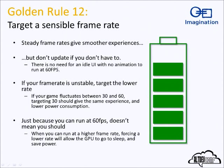The last golden rule: never forget the giant green battery — try to target a sensible frame rate. Steady frame rates give better experiences, and there's no reason to render a static UI 60 times a second if it's not going to change — render once and start again on user input. We've found that a fluctuating frame rate between 30 and 60 FPS feels the same as a steady 30 FPS, so you might as well save power. And just because you could run at 60 FPS doesn't mean you should — for a slow-paced game, render at a lower rate to either improve visuals or save power.